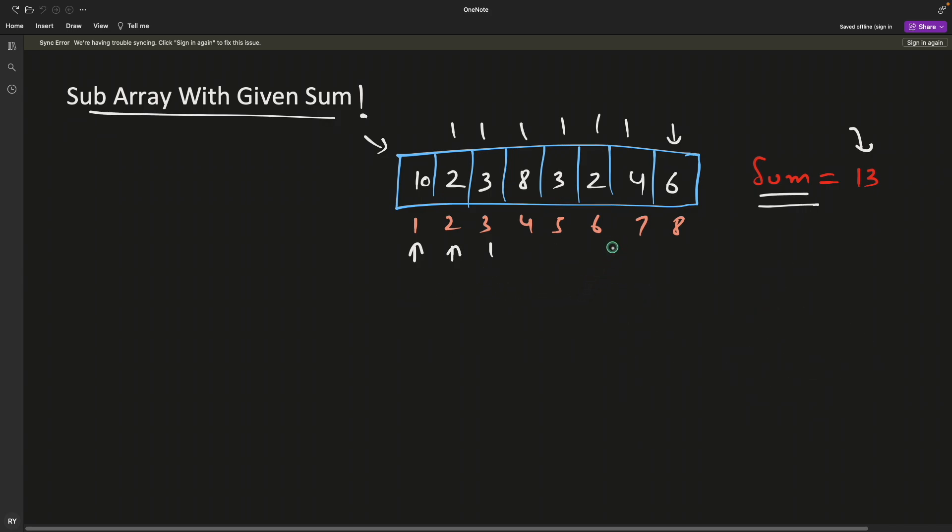Now we have a better approach. You select the starting point and then you go further. First you will check if this is the number. Like if 10 was written, then this is the number, so you will return 1 and 1. You are supposed to return the index. If this was 12, then the answer would be 1 and 2, meaning in the given array from index 1 to 2 you have your total sum.